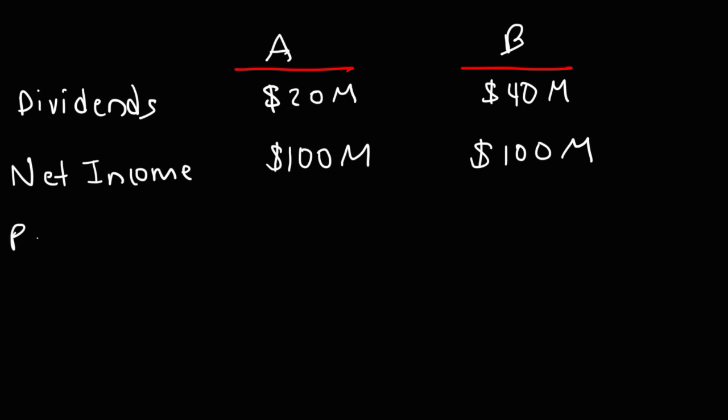So, what is the payout ratio for each of these two companies? The payout ratio is the dividends divided by the income. So, it's 20 million divided by 100 million in net income. That's 0.20. If you multiply that by 100%, that gives you 20%. So, that's the payout ratio for company A.